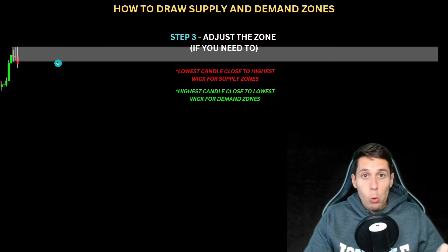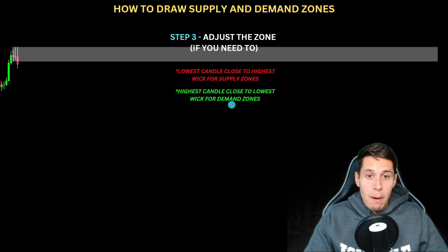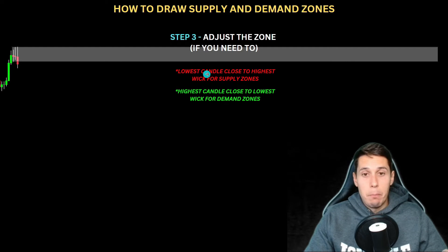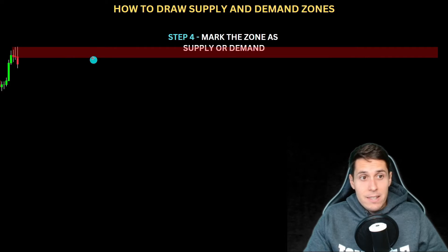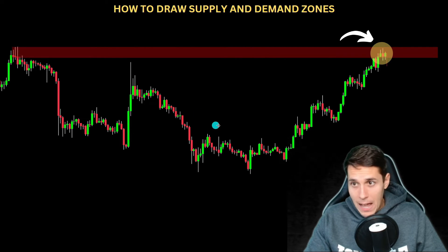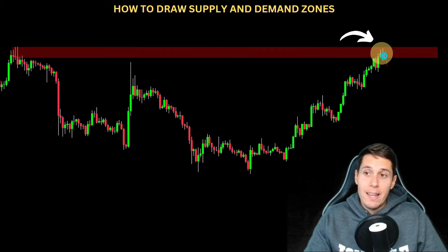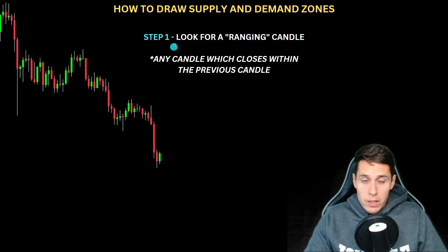Now make one more adjustment to the zone. For supply zones, adjust from the lowest candle close to the highest wick. For demand zones, adjust from the highest candle close to the lowest wick. Since we got a candle close below the zone, this is a supply zone, so we adjust from the lowest candle close to the highest wick. Lastly, you can change the color of your zone — for a supply zone, make it red. When price comes back to your zone, you can expect it will get rejected and go down, and that's exactly what happened.